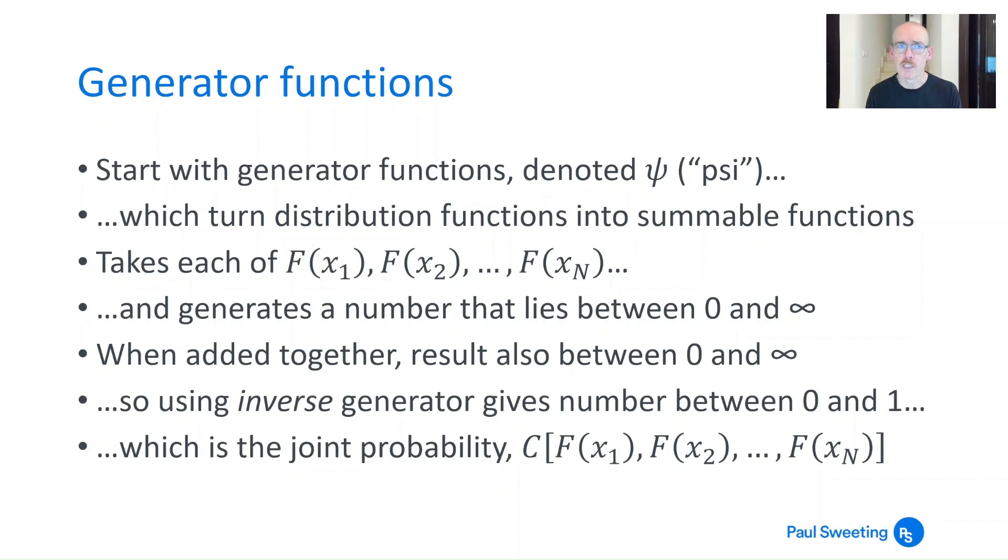So Archimedean copulas you start with the generator function which is denoted ψ (psi) and this turns the distribution functions into something which you can sum and then turn back into a joint distribution function. It takes each of F(x₁), F(x₂), all the way up to F(xₙ), so the distribution functions for each of your variables, and generates a number that lies between 0 and infinity.